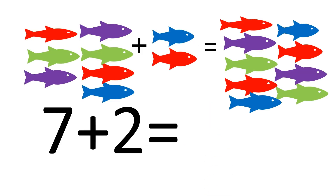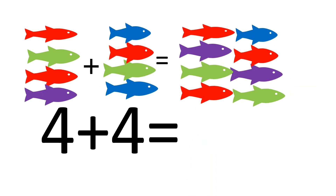4 plus 1 is equal to 5. How many fishes are there? 4 plus 4 is equal to 8. How many fishes are there? 4 plus 4 is equal to 8.